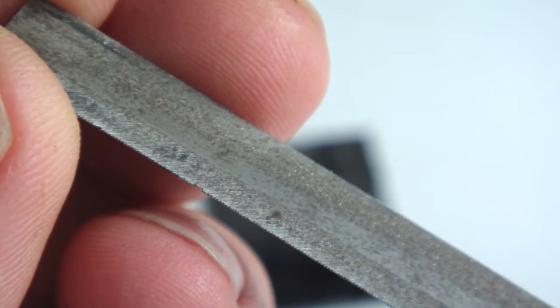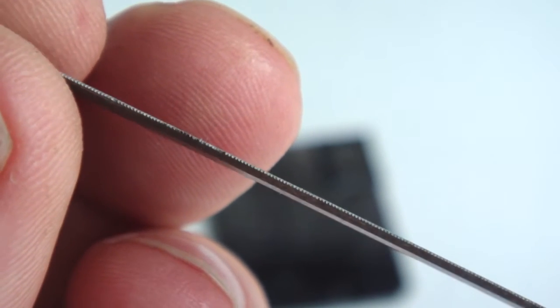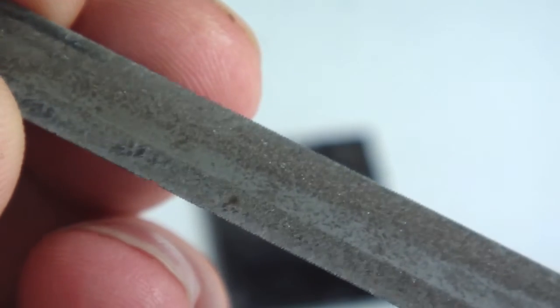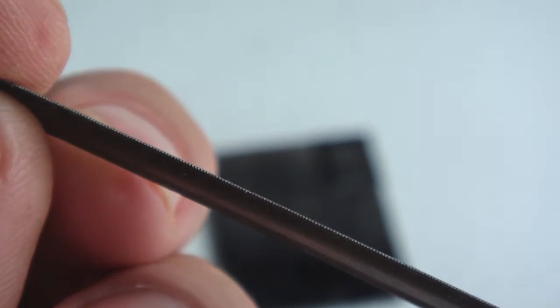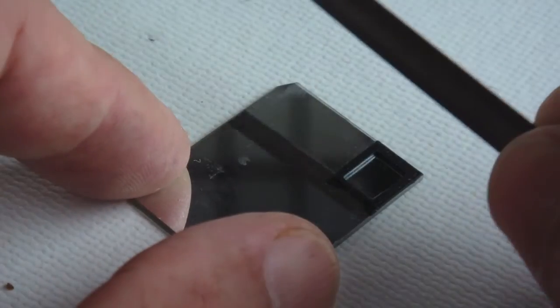This close-up shot reveals how thin the file surface is on this type of file. For creating scribe marks on a tiny mirror, it is an ideal profile.